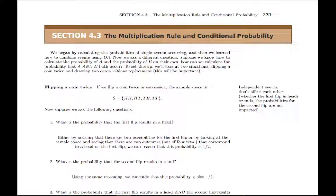In section 4.3, we'll do something similar to section 4.2, where in 4.2 we had the probability of one thing or another thing happening. Here, we're going to look for the probability that two things both occur — we use the word 'and.' When you see 'or,' you use the addition rule. When we see 'and,' we're going to have a multiplication rule. There's a simpler version and a general version, similar to the two cases in section 4.2.